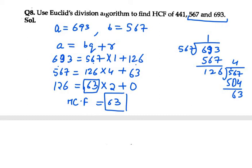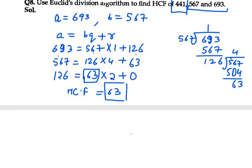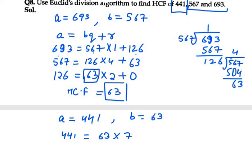Now we take this result and the leftover number, that is 441. So we need to find Euclid's Division Lemma between 63 and 441. A is 441 and B is 63. So 441 equals 63 into 7, which is 441, so the remainder will be 0.